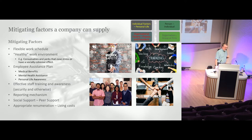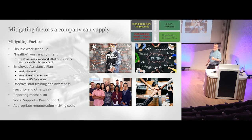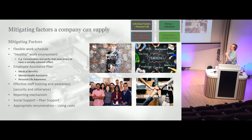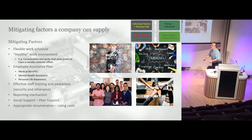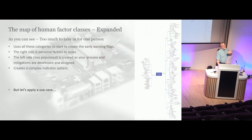Mitigating factors a company can supply: flexible work schedules mean people can take into account home or personal factors they need to deal with. Healthy work environments matter — I've been to companies where people have literally had to work in a place that hasn't been vacuumed for 18 months, and these people are as down as the environment they work in. Employee assistance plans help with those life events that are going to be random. When you do that, the individual is less likely to turn rogue because they know the company is on their side, at least to a point. Training, reporting, social support, peer support, and appropriate remuneration all matter — if people feel underpaid, that's a huge pressure.